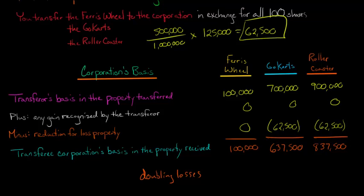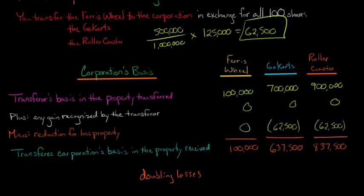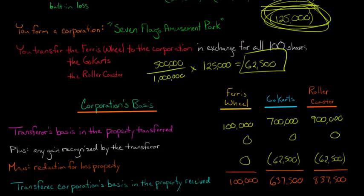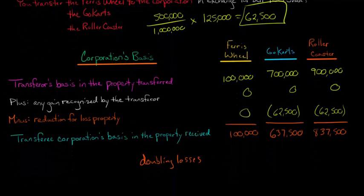There is an exception: the corporation can choose not to take these basis reductions, but the corporation and the shareholder — the transferor — would have to agree. If you agree, you take the $125,000 (the two $62,500s combined) as a basis reduction to your shares instead. Since you're receiving all 100 shares of the new corporation, you could reduce your stock basis by $125,000 rather than reducing the corporation's asset basis.